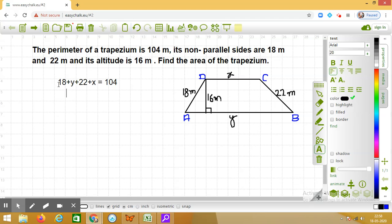This implies Y plus X is equal to 104 minus 18 plus 22, which is 40. This means Y plus X is equal to 104 minus 40, which gives me 64.